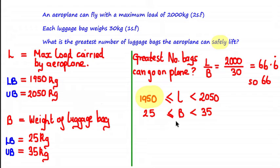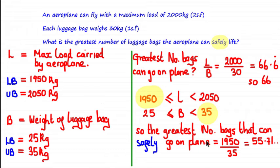Looking at the maximum load: it's possible the maximum load could be close to 2,050, which would be great as it means we could take more bags. However, as we want to ensure we are flying safely, we certainly don't want to be overestimating — we want to choose the lowest possible value, which is 1,950. For the bags, they could weigh 25 kg, which would also mean we could take more bags. But acting with caution, we want to assume they're on the higher end of weight, so we choose 35.